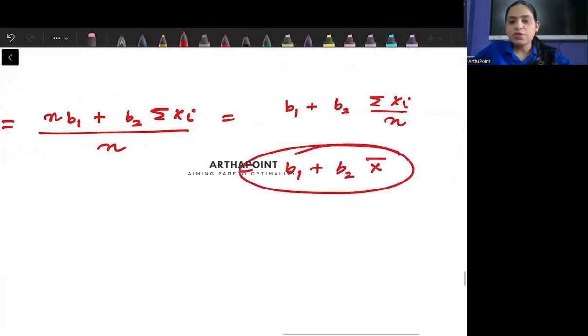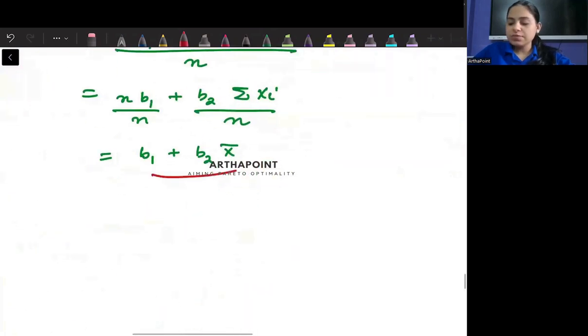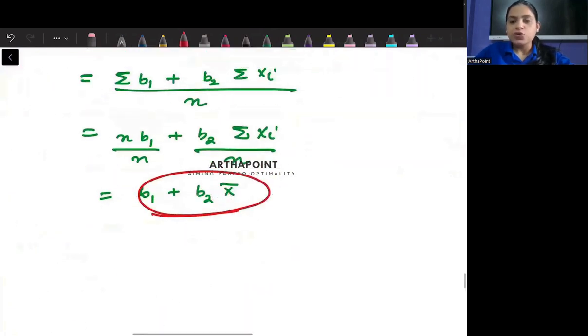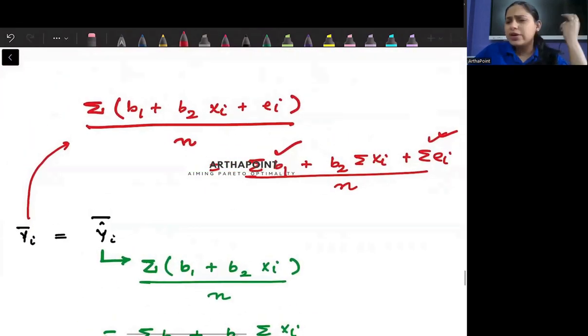So this is also giving me b1 plus b2 x bar. And this is also giving me b1 plus b2 x bar. So clearly the two means are exactly equal to each other. It wasn't even required.